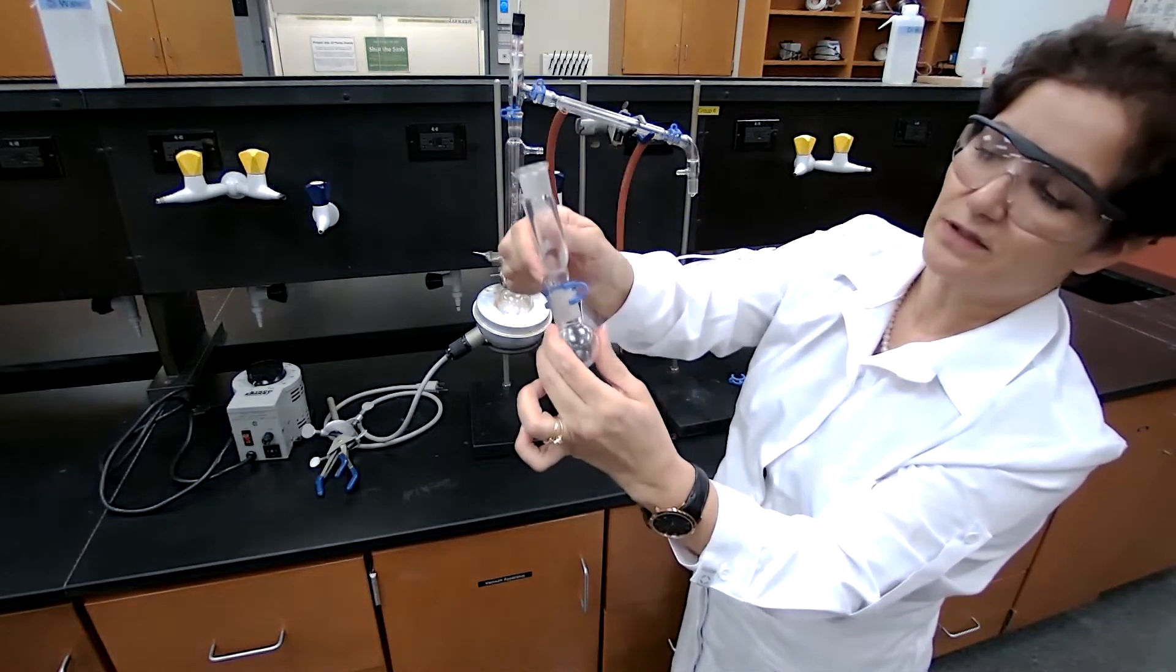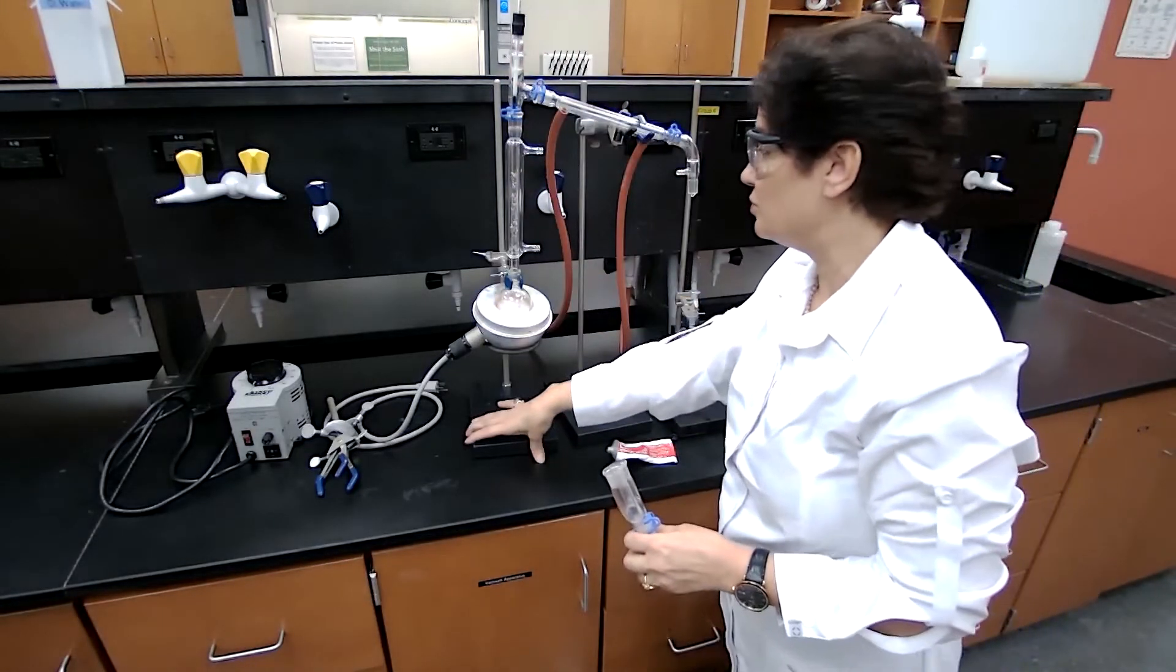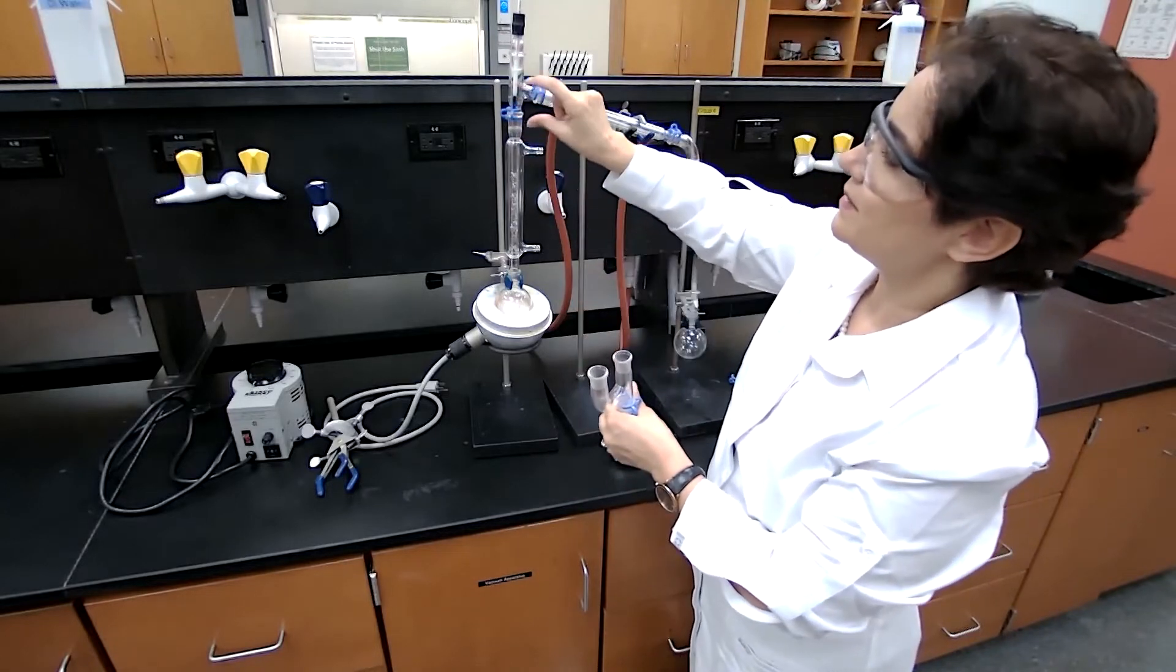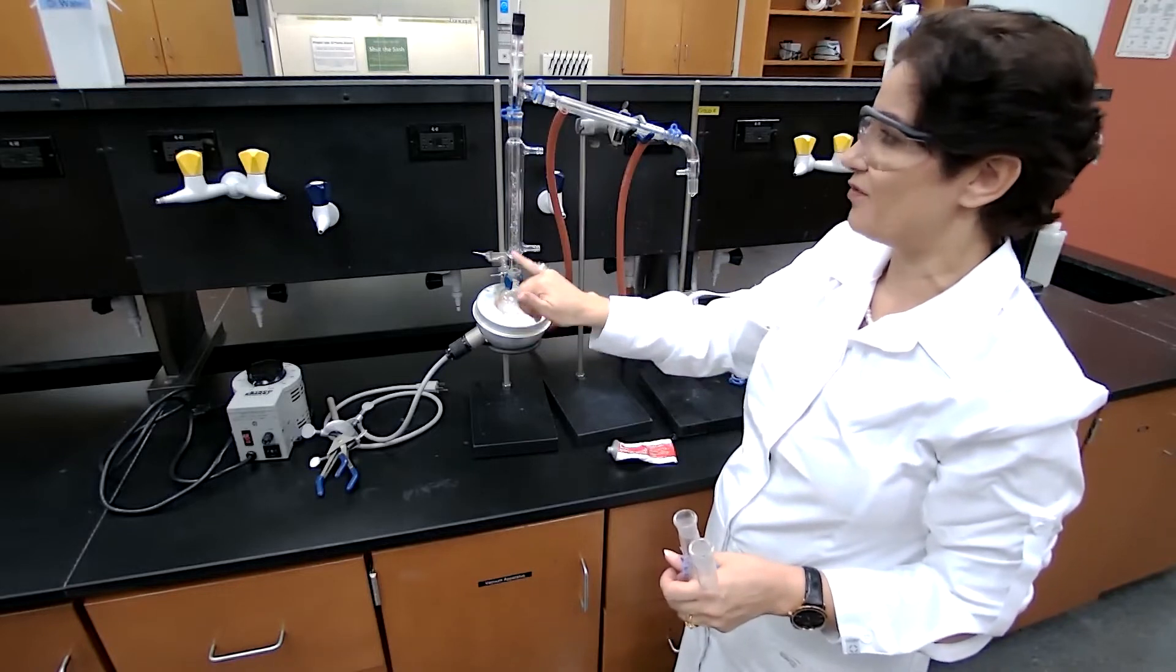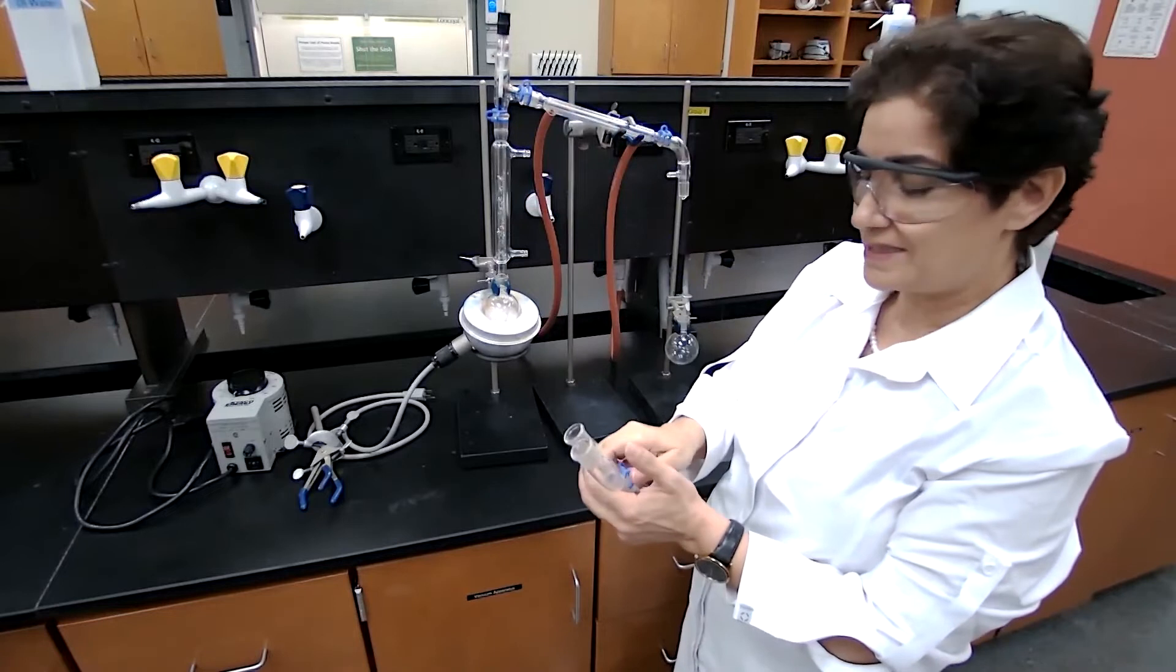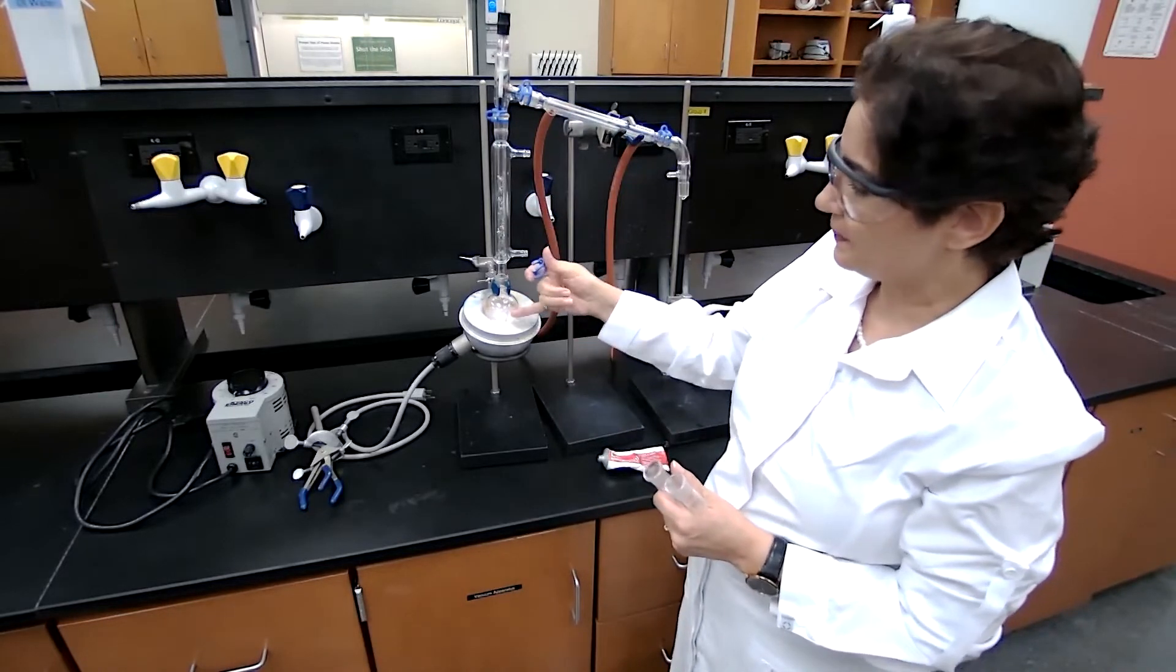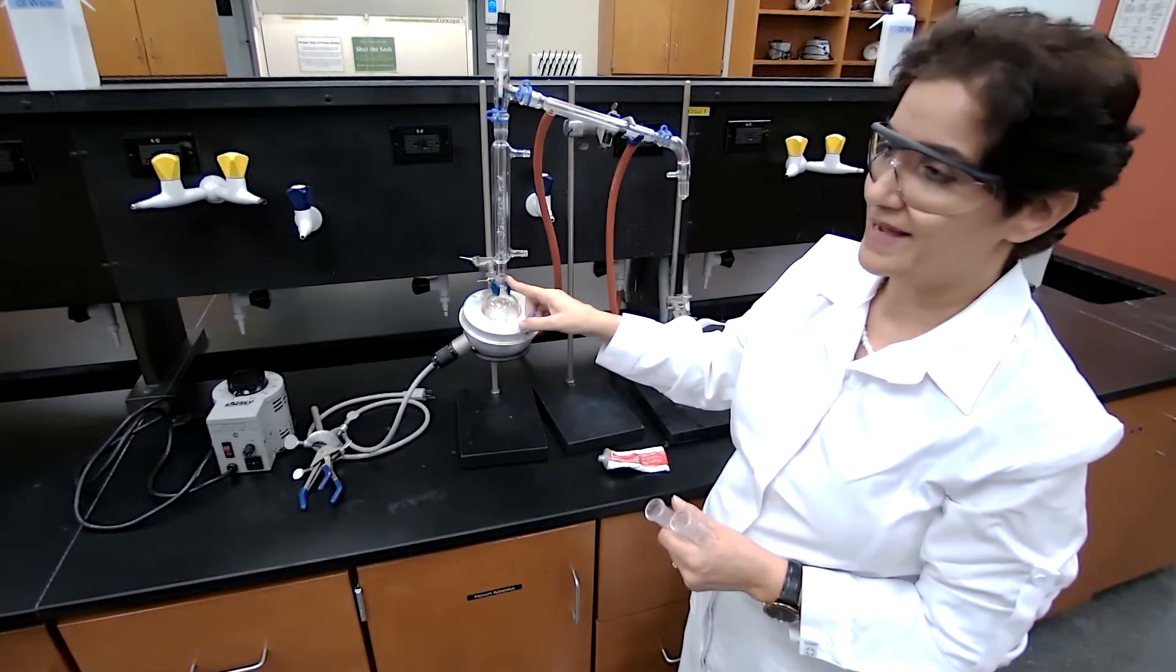It holds it together. After you set up your distillation, sometimes you move things around when you heat up. We don't want these glass joints to get separated because if it gets separated then you have an opening for the vapor to leave the system. We want to make sure that all the glass joints are trapped. After I place the chemical during the experiment, I put one also for the boiling flask.